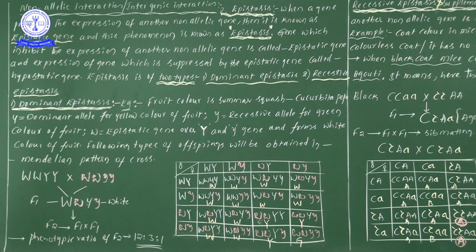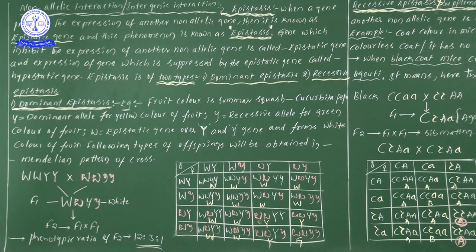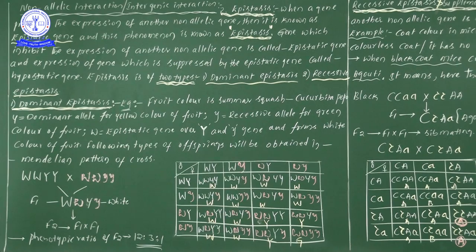The epistatic gene is the suppressing gene. The suppressed gene is the hypostatic gene. So with two genes — one dominant suppressing the action of the recessive one — the recessive one is considered as the hypostatic gene.